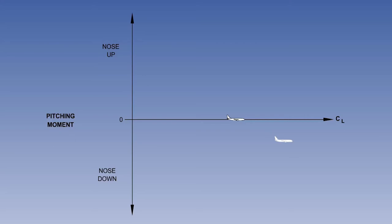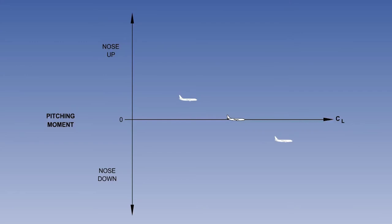The graph is reset with the aircraft in equilibrium. A downward acting gust now decreases the lift coefficient. Because of its longitudinal static stability, the aircraft will generate a nose-up pitching moment, which will start the aircraft back towards equilibrium. If we join together the point representing the aircraft in equilibrium, the point representing the pitching moment from an increase in angle of attack, and the point from a decrease in angle of attack, the plot represents a longitudinally statically stable aircraft.